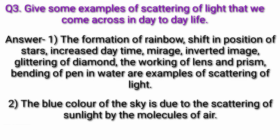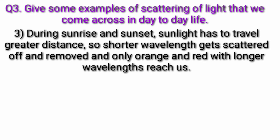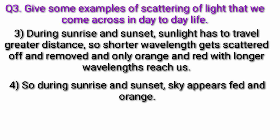The blue color of the sky is due to the scattering of sunlight by the molecules of air. During sunrise and sunset, sunlight has to travel a greater distance, so shorter wavelengths get scattered off and removed, and only orange and red with longer wavelengths reach us. So during sunrise and sunset, the sky appears red and orange.